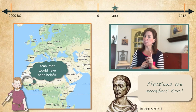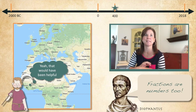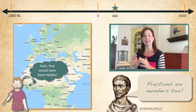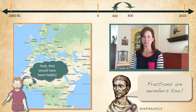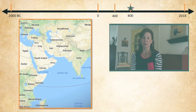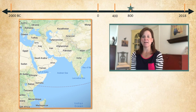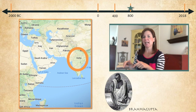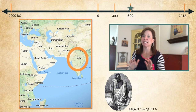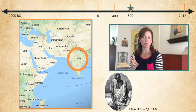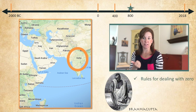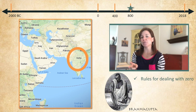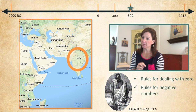We have to jump again through time — and trust me, I'm skipping a lot — and we're going to head to India in 800 AD. Welcome to India. Now I'd like to introduce you to Brahmagupta. Total genius. He did a ton. But two of his most important contributions were the rules for dealing with zero, which was a new concept back then, and the rules for dealing with negative numbers.